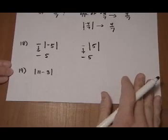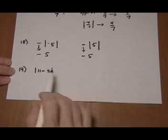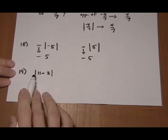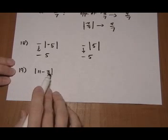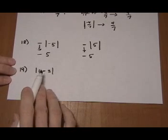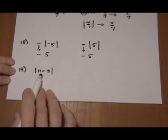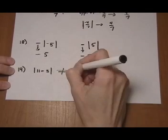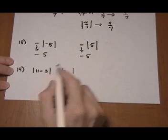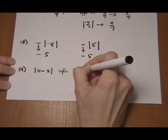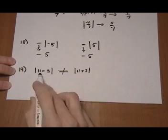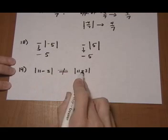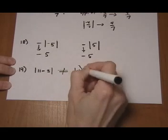And number 19, something else to watch out for. The absolute value doesn't reach outside to touch a negative on the outside. And as far as on the inside, it only acts to take away the negative of the very final number you have. So for example, here we do not want to say the absolute value of 11 minus 3 is the same as the absolute value of 11 plus 3. It does not reach inside in between terms to get rid of a negative. That would be a wrong answer.